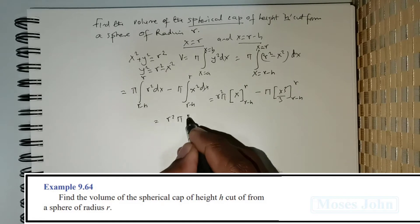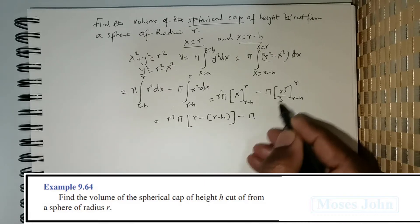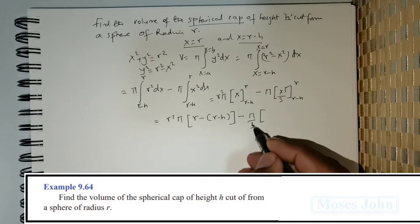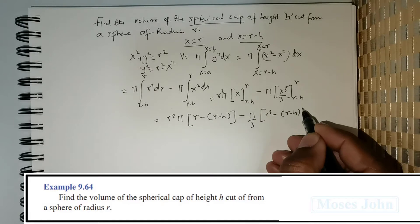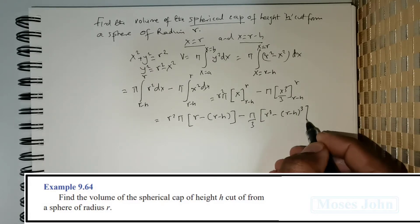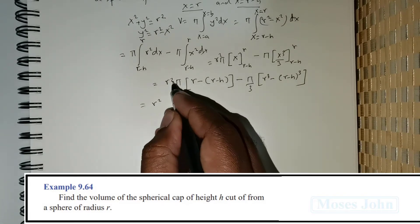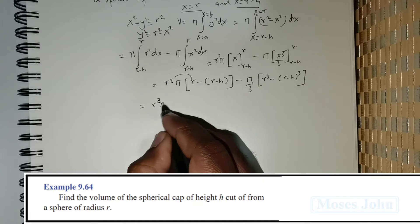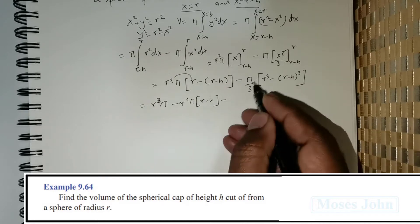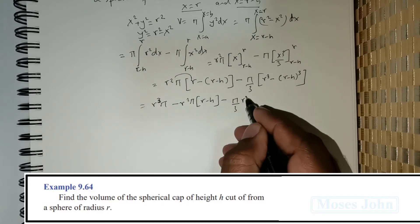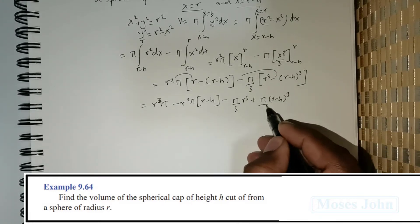Substituting the upper limit gives r and the lower limit gives r − h for the first term. For the second term, the constant 1/3 gives π/3, with upper limit substitution yielding r³ and the lower limit yielding (r − h)³. Note that negative times negative gives positive, so we have +π(r − h)³/3.